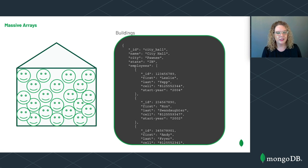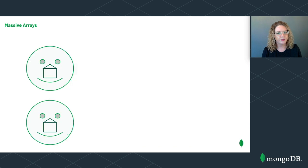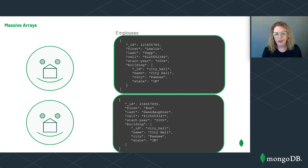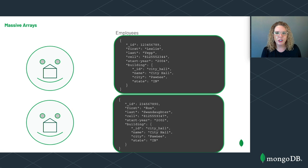So how can we fix this? Instead of embedding the employees in the buildings document, we could flip the model and embed the buildings in the employees documents. Looking at the documents for Leslie and Ron, we're repeating the City Hall information in each employee document. If we frequently display employee and building information together, this model probably makes sense. The disadvantage is data duplication — and every time we need to update City Hall's information, we'll need to update every employee who works there. However, since building information updates will likely be very infrequent, this approach may be a good one.